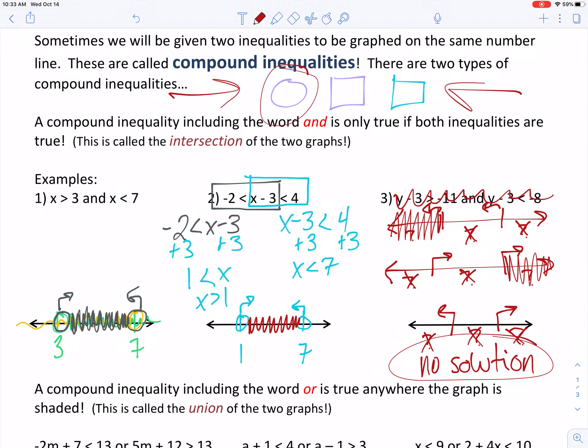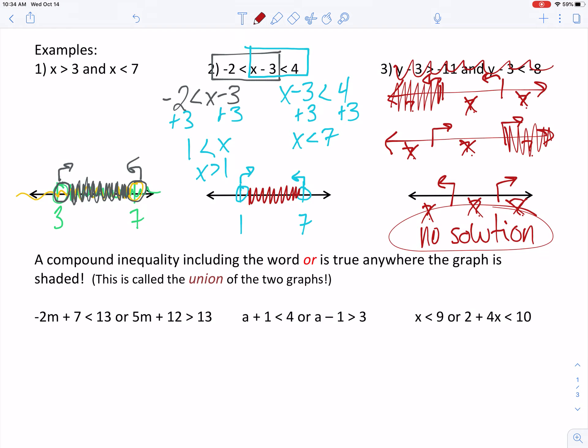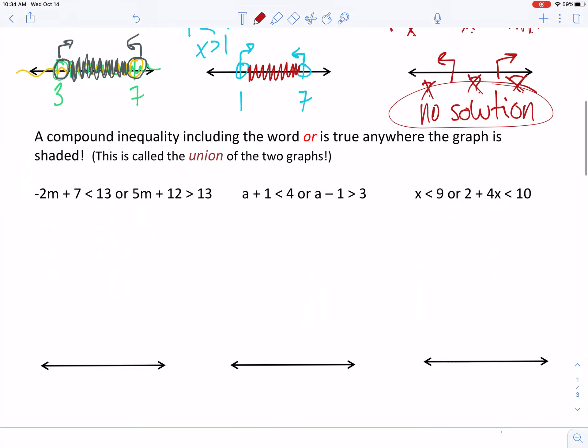That's the idea down here. Now here's the thing with ors. Ors will always say or. With an and, sometimes they're going to be kind of sneaky and they're not going to write it like they did on that problem there. But on ors, it will always say or every single time.